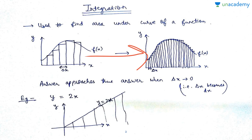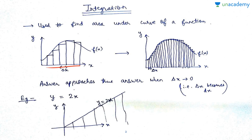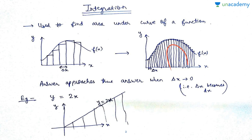An improvement is to reduce the width of the rectangles. Delta x is the width of each rectangle. If you reduce this width further, the approximation improves significantly. When you find the area of all these smaller rectangles and sum them up, the value is much closer to the correct value because the error terms are very small.